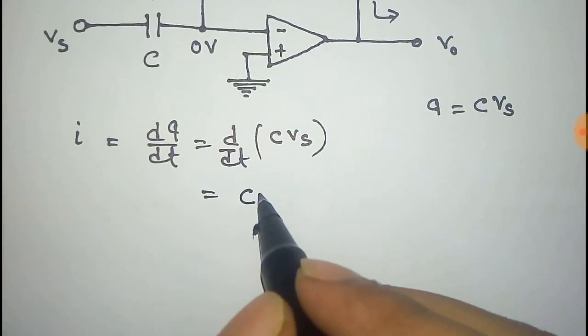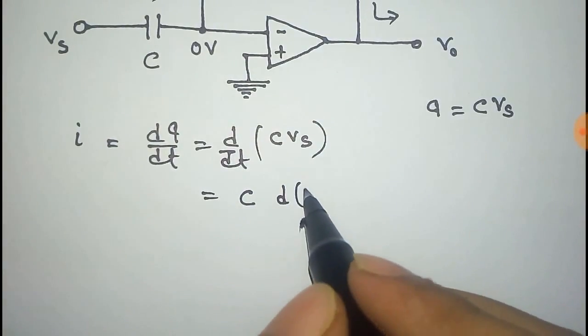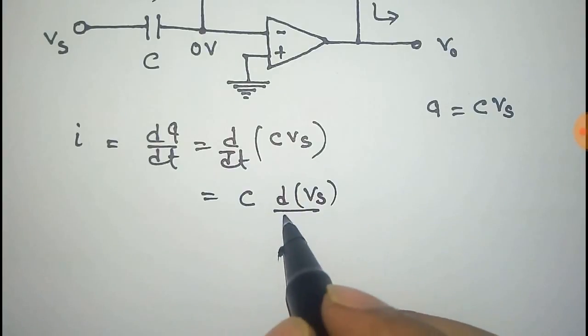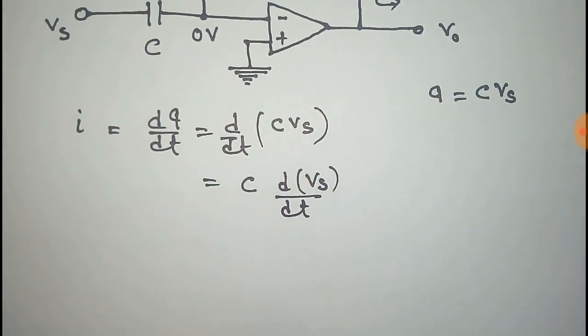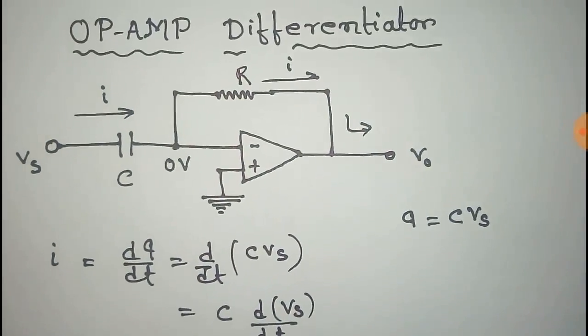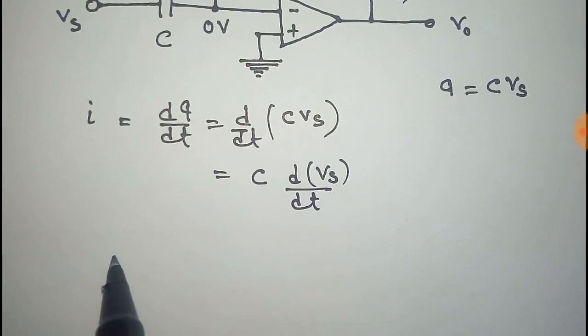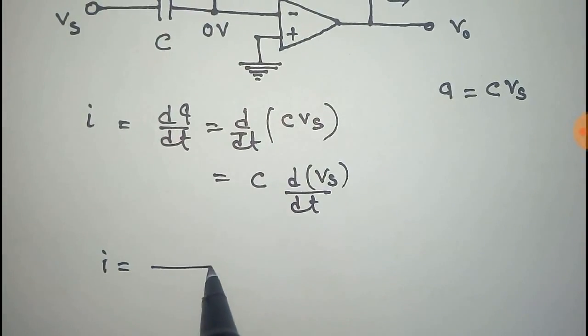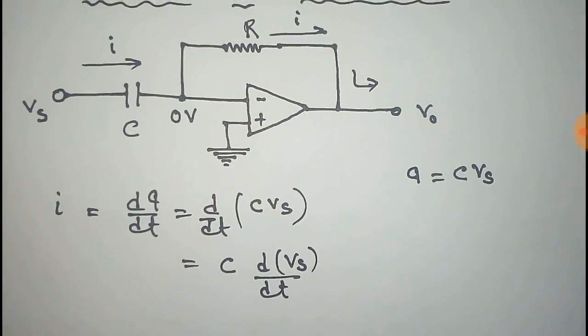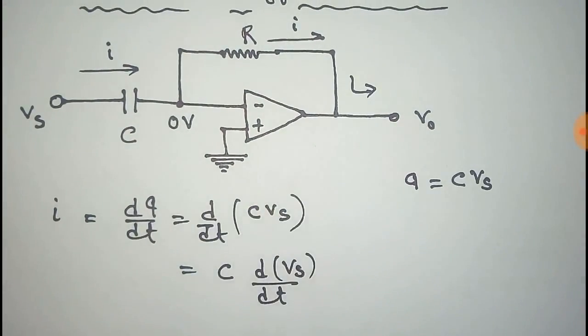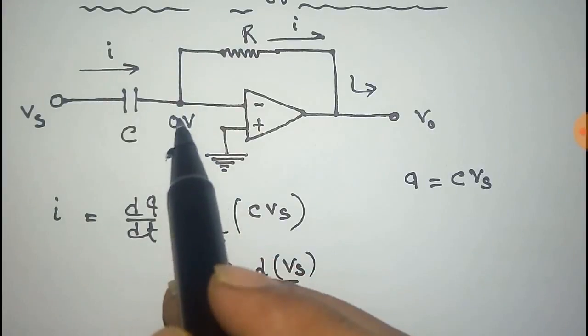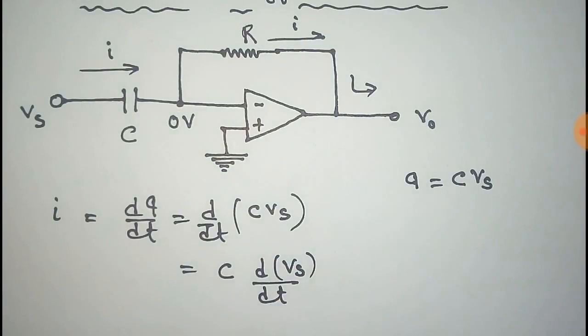On the other side, this current is equal to the voltage difference, that is zero minus Vo, by the resistance R. So i is equal to (0 - Vo)/R, which is -Vo/R.